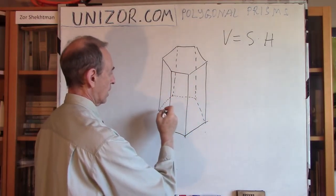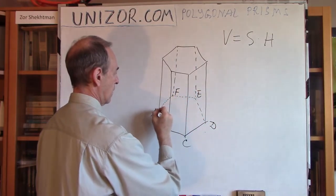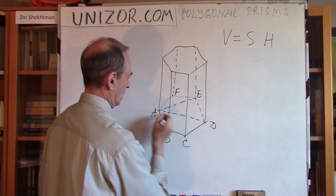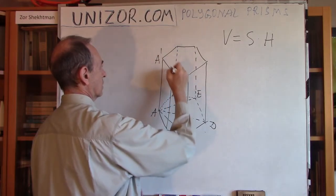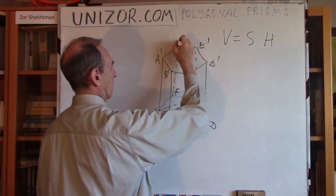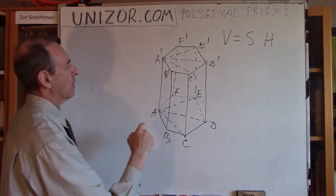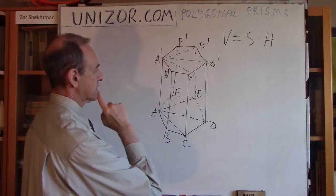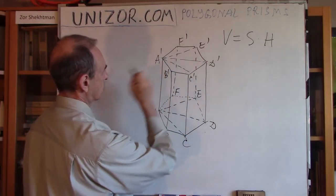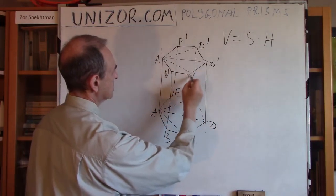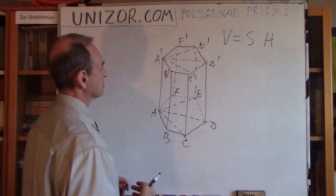Because what I can do is divide it into triangular prisms like this. For instance, the vertices are A, B, C, D, E, F. I will connect one particular vertex with all others here and correspondingly here. In this case, I have cut my hexagonal prism into one, two, three, four triangular prisms. One is A, B, C, A', B', C'. Another is A, C, D. These are vertical planes which cut my hexagonal prism into triangular prisms.